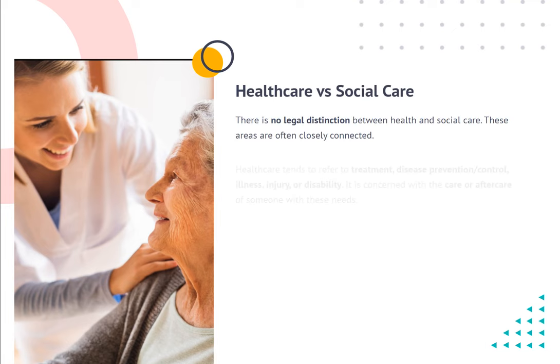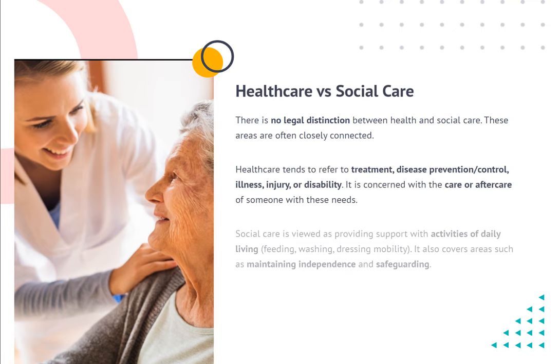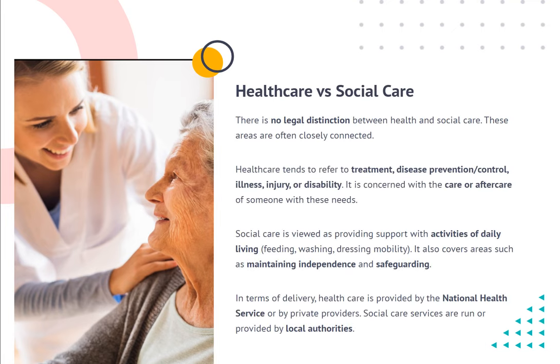Healthcare versus social care. There is no legal distinction between health and social care, and these areas are often closely connected. Healthcare tends to refer to treatment, disease prevention or control, illness, injury, or disability. It is concerned with the care or aftercare of someone with these needs.